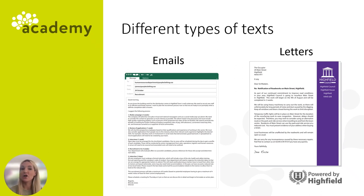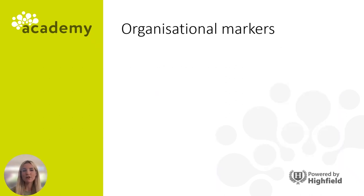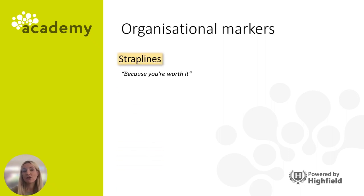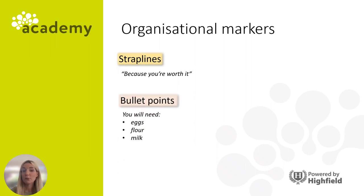To gain marks for this criteria you would need to include subheadings, bullet points, numbered lists, or footnotes, for example, in your email or letter. Now let's look at some organisational markers that you may need to use in your writing exam. Strap lines are often used in articles, leaflets, and adverts, and usually give the reader an extra bit of information about the text that will make them want to read more. Bullet points help to organise information and are most commonly used when you want to give several pieces of information at once or if you need to include a list.